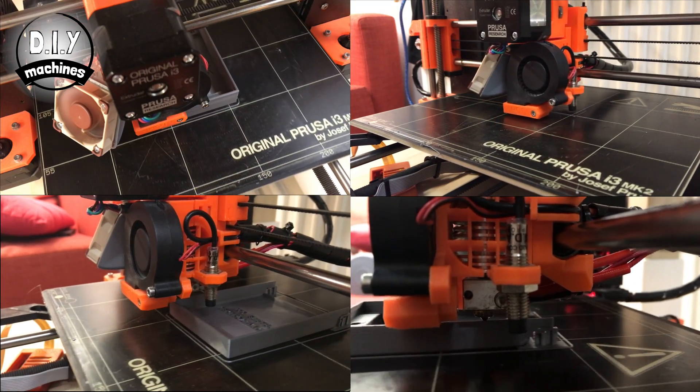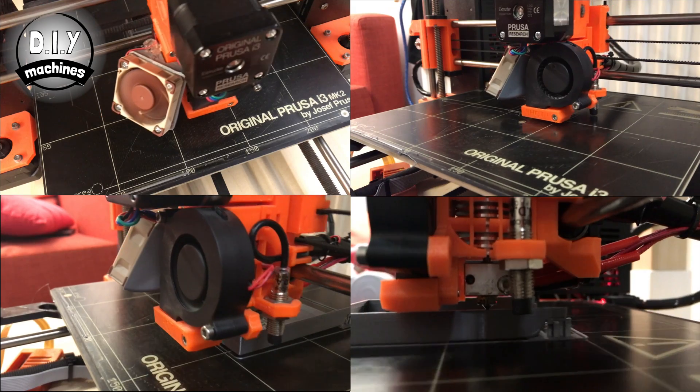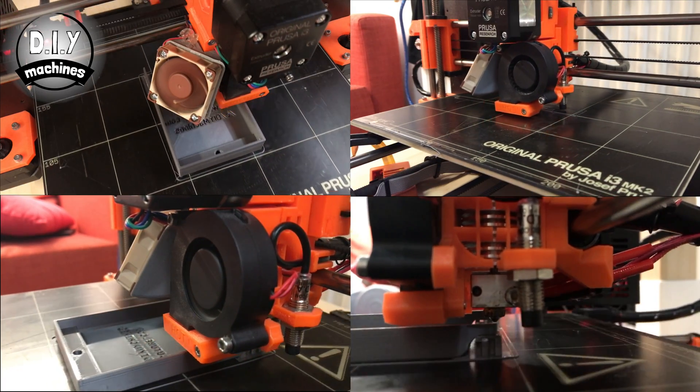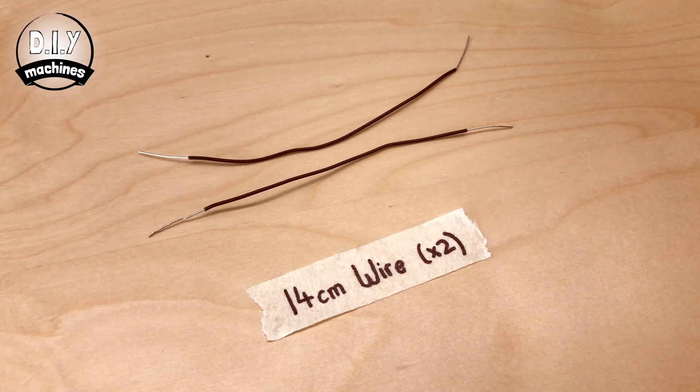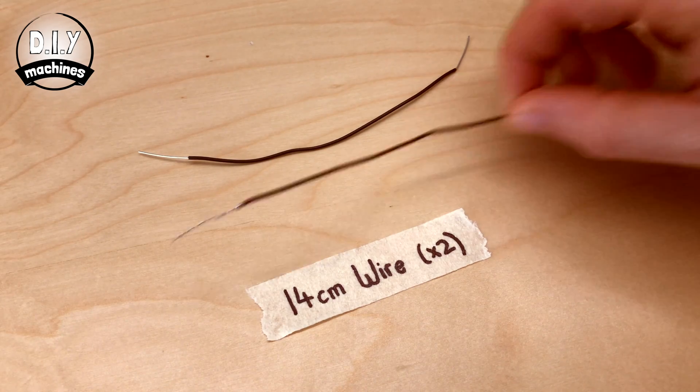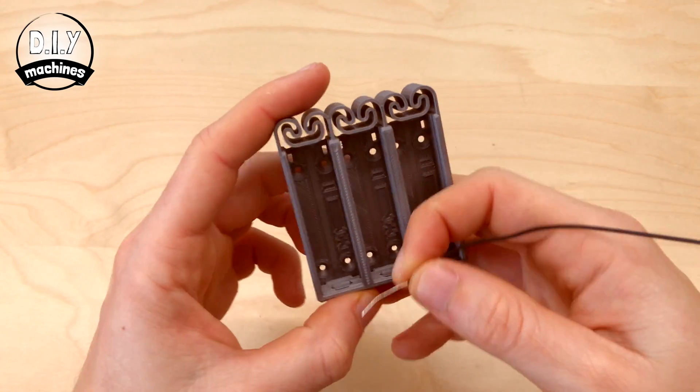You'll need to print all of the required parts. There's a link in the description below where you can download them. First, we will assemble the battery holder.